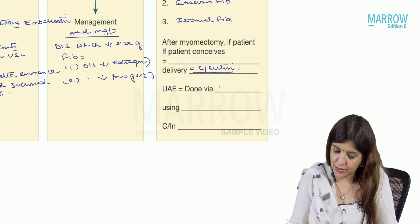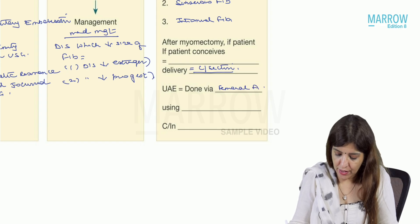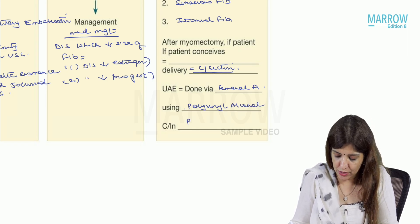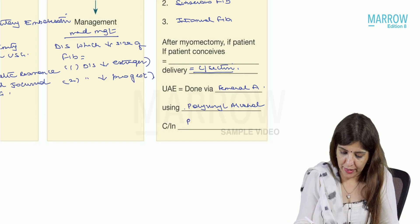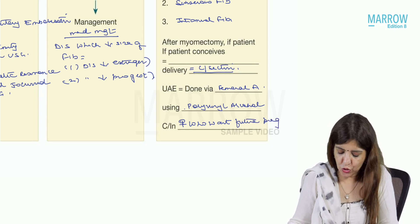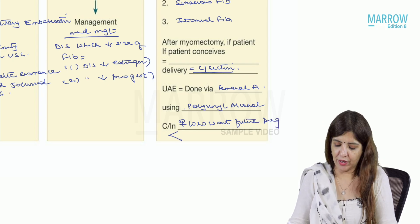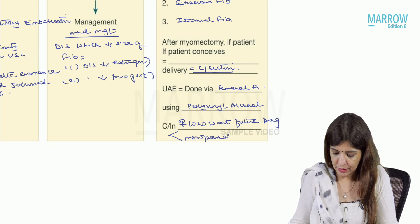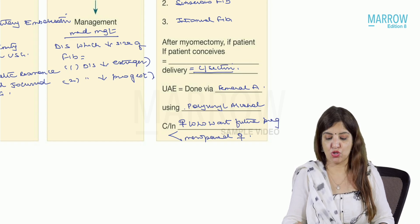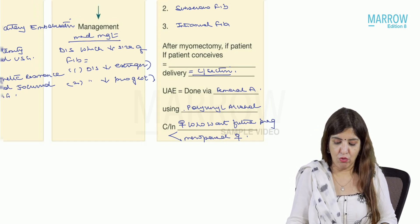Uterine artery embolization is done via the femoral artery using polyvinyl alcohol. It is contraindicated in females who want future pregnancy. This procedure is also technically difficult in menopausal females, so uterine artery embolization is not preferred in menopausal females either.